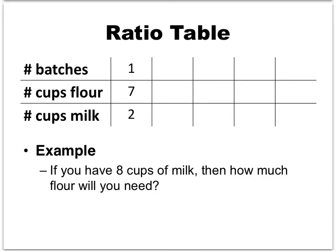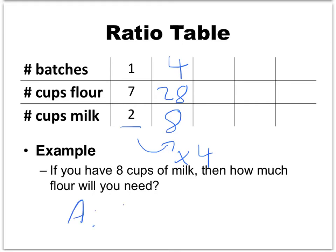Let's illustrate how we can use this idea. Going back to the original ratio of 7 cups of flour to 2 cups of milk, suppose we have 8 cups of milk — how much flour will we need? I ask myself: how can I go from 2 to 8? We multiply by 4. So I need to multiply all the numbers in the first column by 4: 7 times 4 is 28, and 1 times 4 is 4. So if I have 8 cups of milk, I'm going to need 28 cups of flour.